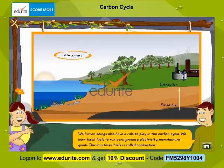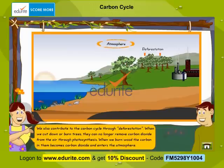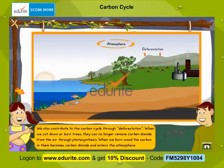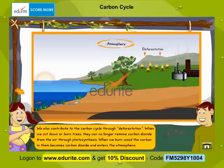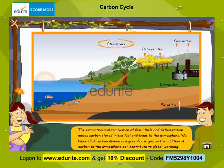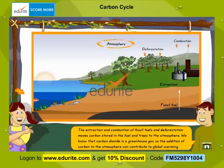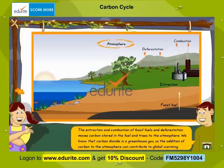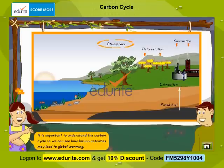Burning fossil fuels is called combustion. We also contribute to the carbon cycle through deforestation. When we cut down or burn trees, they can no longer remove carbon dioxide from the air through photosynthesis. When we burn wood, the carbon in them becomes carbon dioxide and enters the atmosphere. The extraction and combustion of fossil fuels and deforestation moves carbon stored in fuel and trees to the atmosphere, contributing to global warming. It is important to understand the carbon cycle so we can see how human activities may lead to global warming.